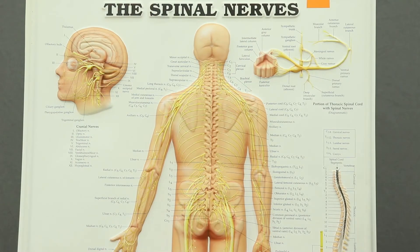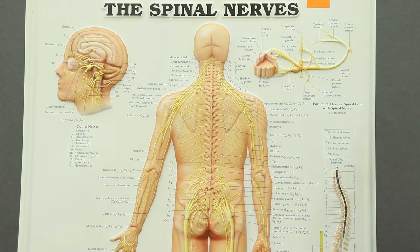Now let's talk about the nerve plexuses and some of the spinal nerves. Nerve plexuses are braids of nerves as they come off of the spinal cord. The spinal nerves weave together into these plexuses at certain points, which creates redundancy in the nerves that emerge from them because they receive axons from multiple levels of the spinal cord. So if one level is damaged, we might still have axons from other levels that are still able to function.